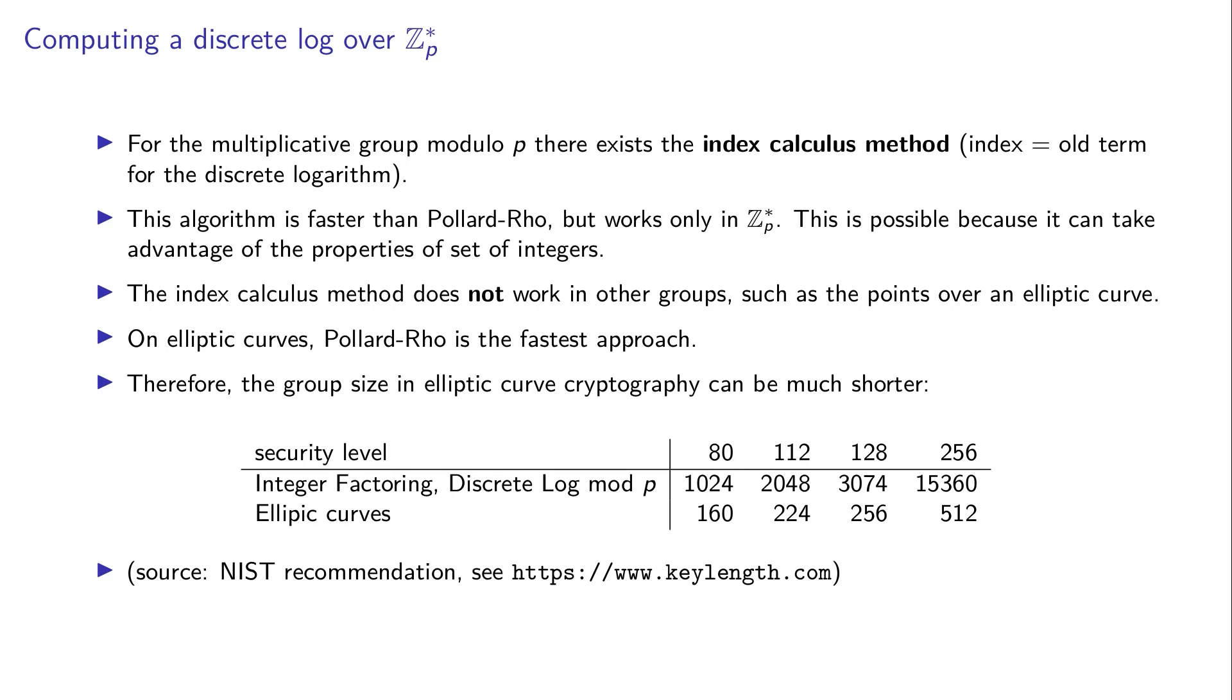The fastest algorithm for discrete log on elliptic curves is Pollard-rho, meaning the group size in elliptic curves can be much shorter. We see here a table showing security levels. For 256 bits of security, an elliptic curve needs to be 512 bits, while RSA needs 15,000 bits. This clearly shows why elliptic curves are taking over cryptography.